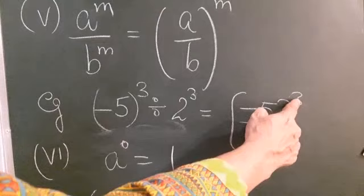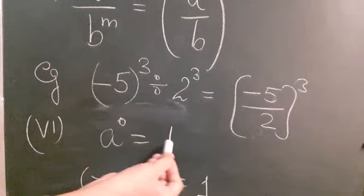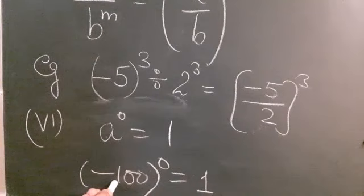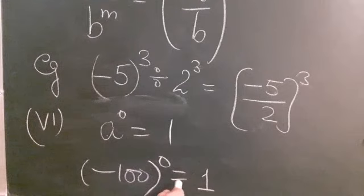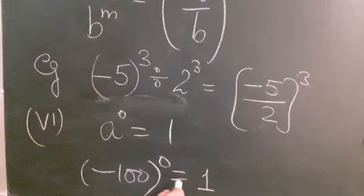The last law: a raised to power 0 equals 1, where a is any non-zero integer. For example, even minus 100 raised to power 0 equals 1. Any integer raised to power 0 always gives the result 1. This is all about the laws of exponents.